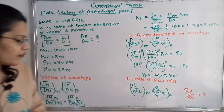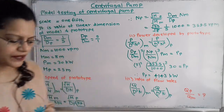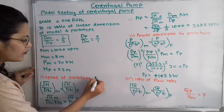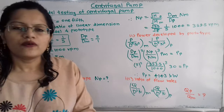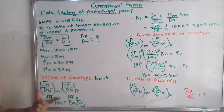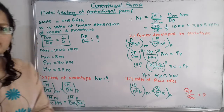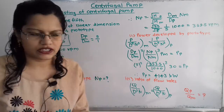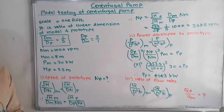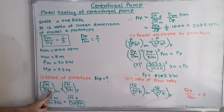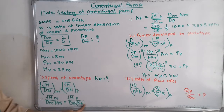The first question is to find the speed of the prototype, N_p. We use the model testing similarity condition: √H / (D·N) of model = √H / (D·N) of prototype. Splitting this gives: √H_m / (D_m · N_m) = √H_p / (D_p · N_p). We need to solve for N_p.